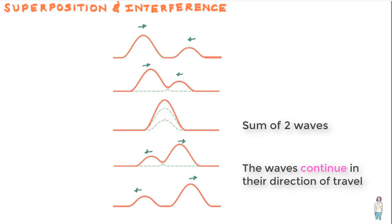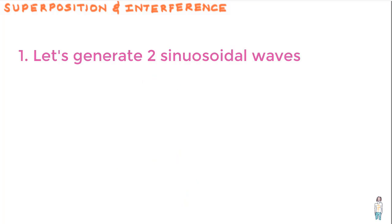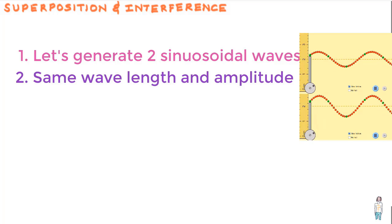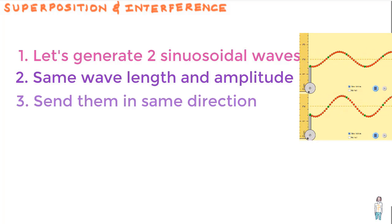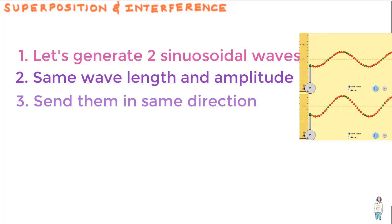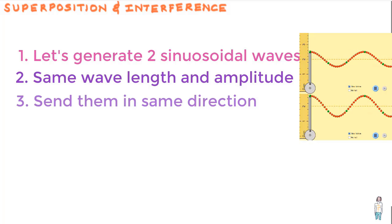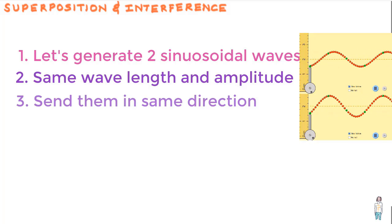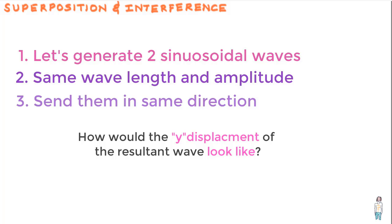That brings us to the concept of interference of waves. Suppose we generate two sinusoidal waves that have the same wavelength and amplitude and send them in the same direction along a straight string. The superposition principle will apply here too, but the nature of the resultant wave will depend on the extent to which the waves are in phase or in step with each other.